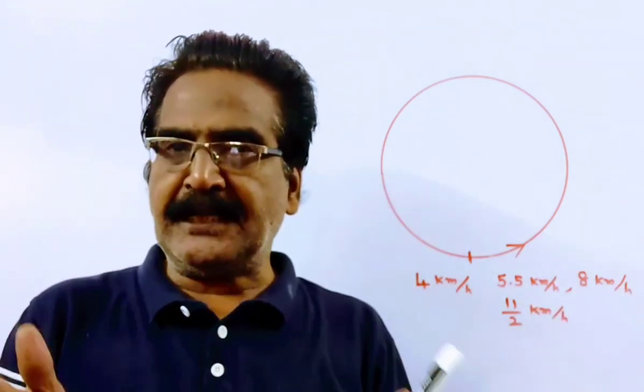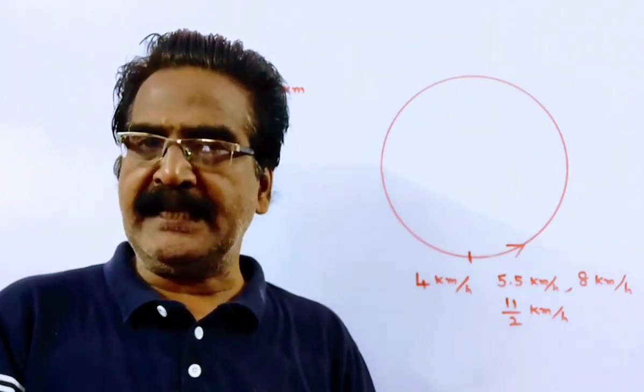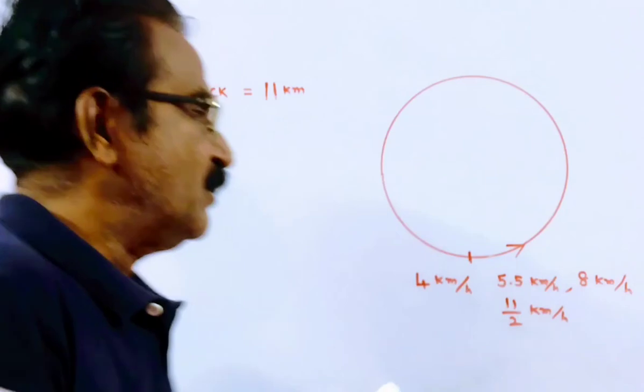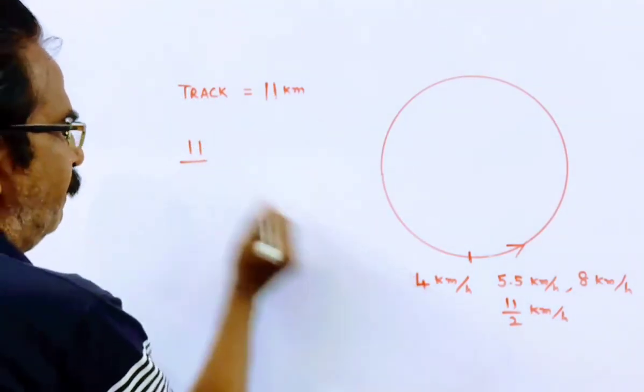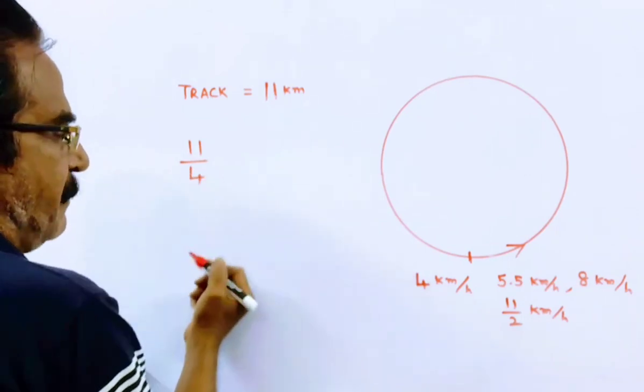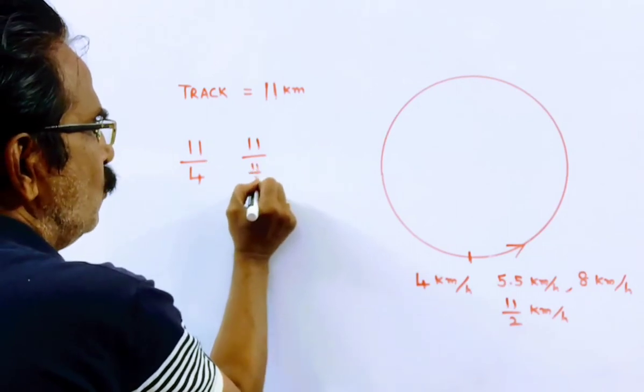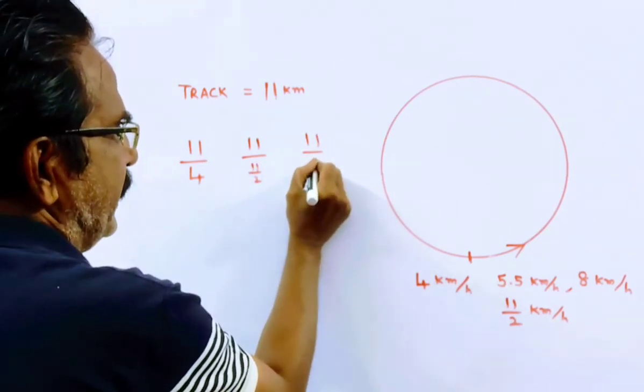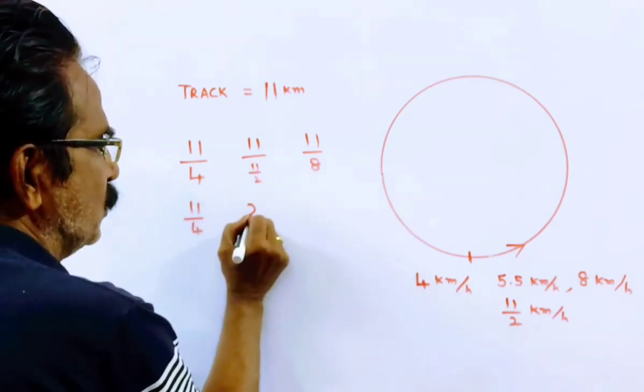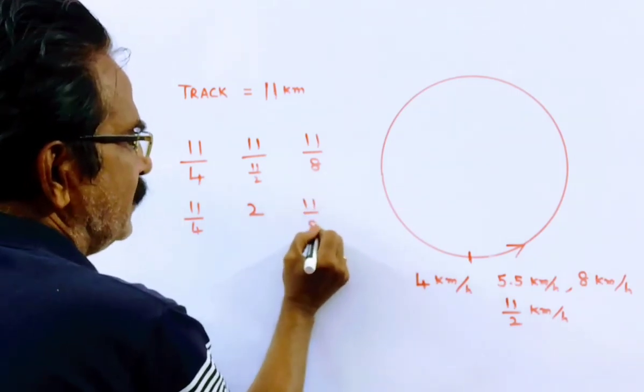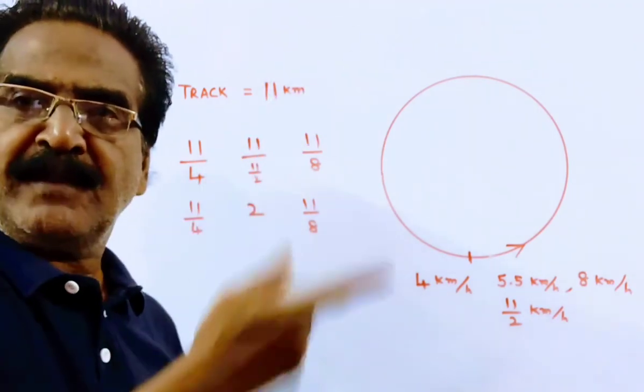So we can find the respective timings to run around the field and we have to find the LCM of those timings. So the first person takes 11 by 4, distance by velocity. The second person takes 11 by 11 by 2, and the third person takes 11 by 8. 11 by 11 by 2 means 2. These are the timings they take to turn around the field.